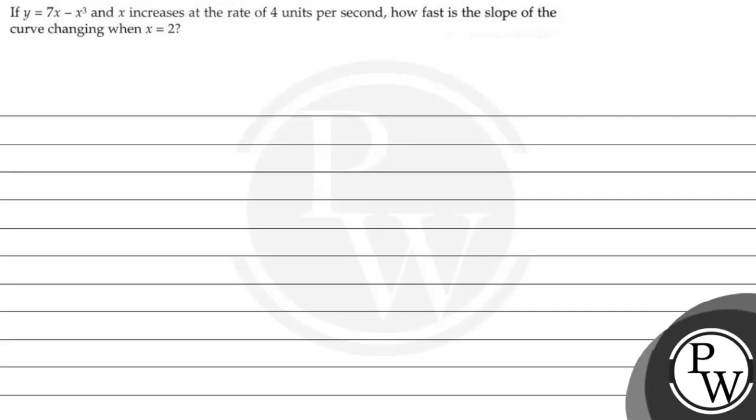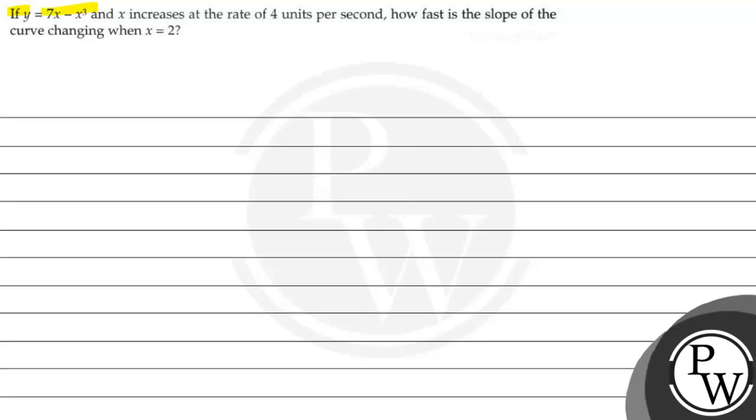Hello, let's first read the question. The question says that if y is equal to 7x minus x cubed and x increases at the rate of 4 units per second,